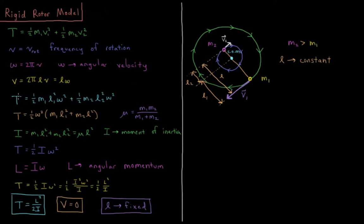We can recast our kinetic energy in terms of the length and omega. Kinetic energy equals one-half mass one times length one squared times angular velocity squared, plus one-half mass two times length two squared times angular velocity squared. Since omega is the same for both atoms, we get kinetic energy equals one-half omega squared times the quantity m1·L1² plus m2·L2².